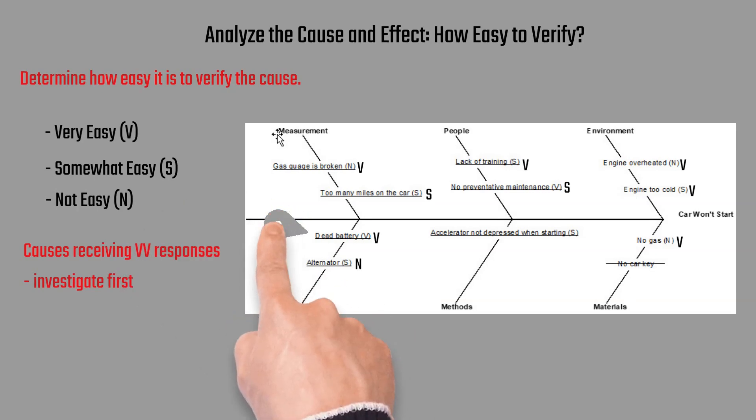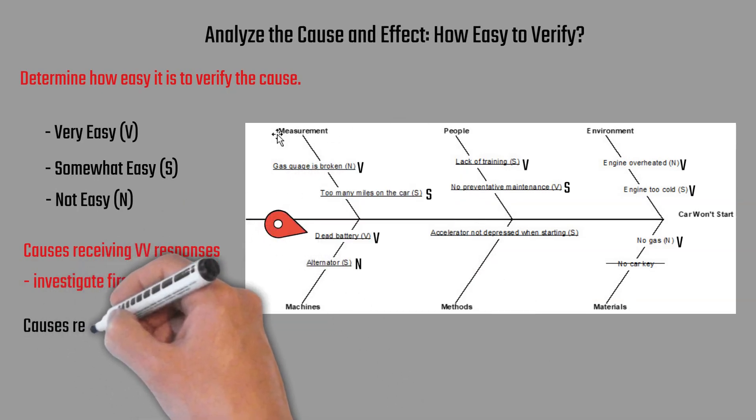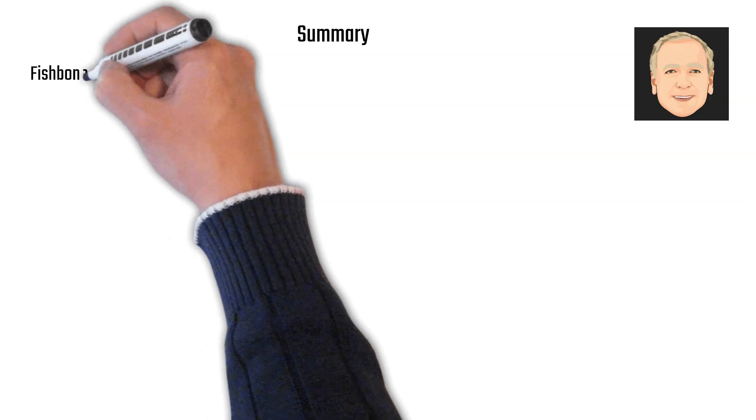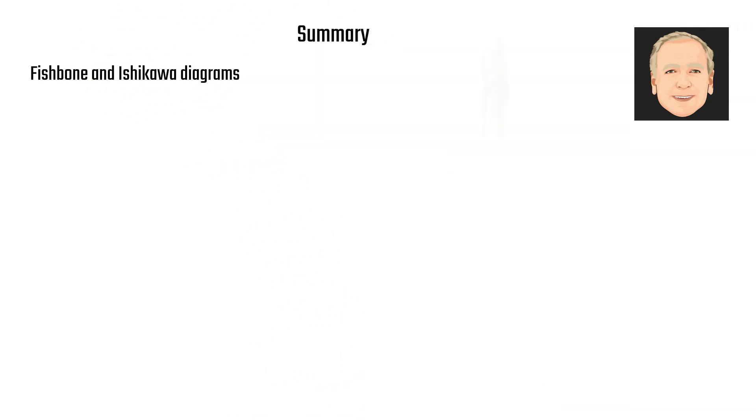So causes receiving VV responses, we want to investigate first. So the first thing we're going to look at, for example, is a dead battery, because it had a V for both how likely it is to be the problem and how easy is it to verify the problem. So you look at the VVs first. That helps you get down to root cause analysis.